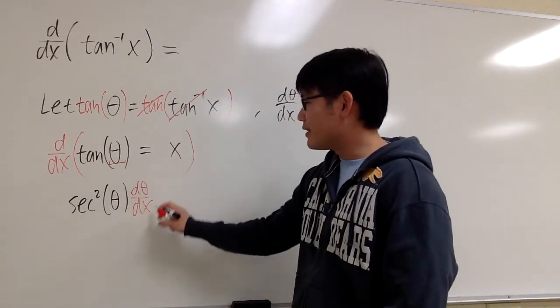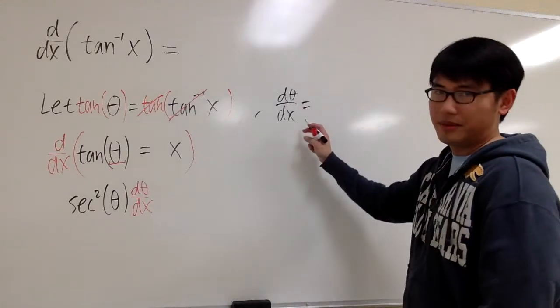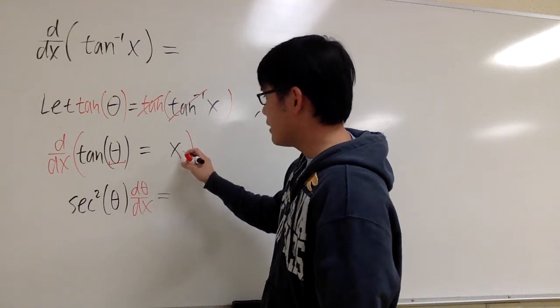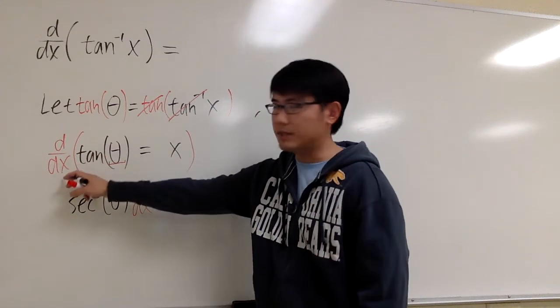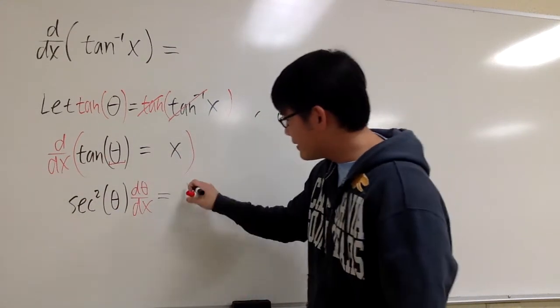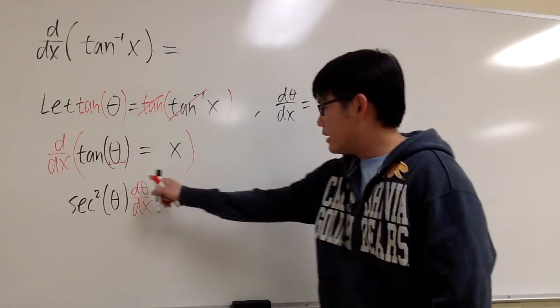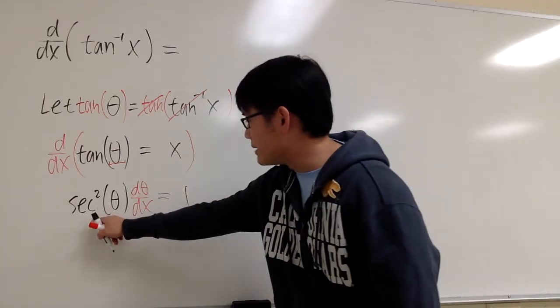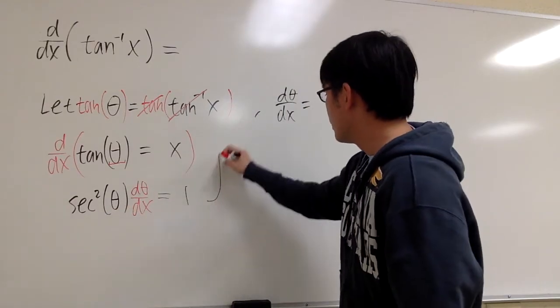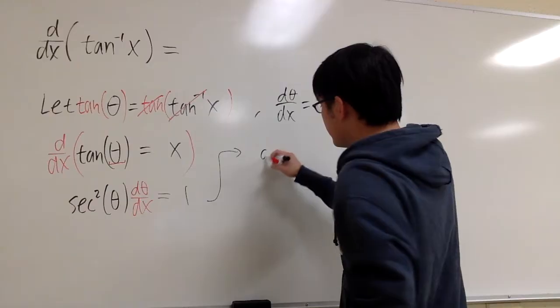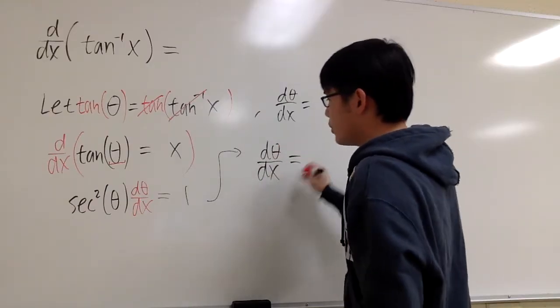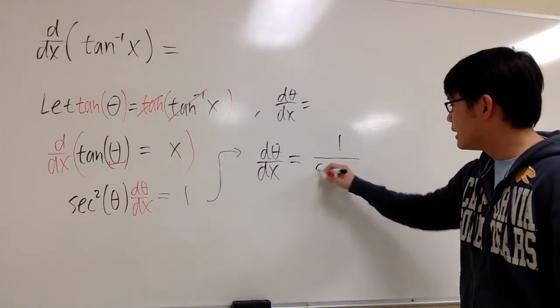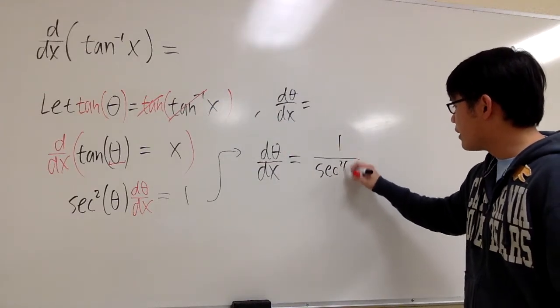And this right here is exactly what we're trying to get. However, we still have the derivative of x with respect to x equals 1. We can just isolate dθ/dx. We can divide both sides by secant squared theta. So here we get dθ/dx, which will be 1 over secant squared theta.